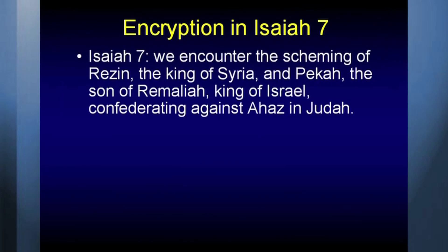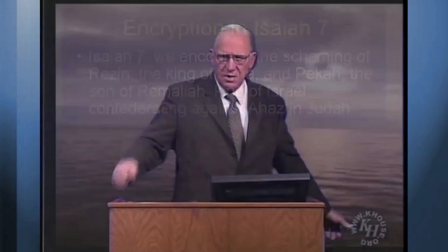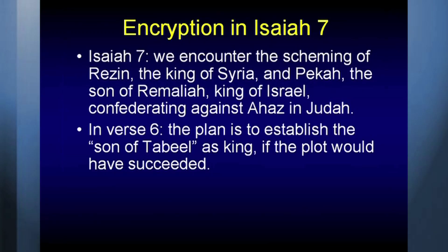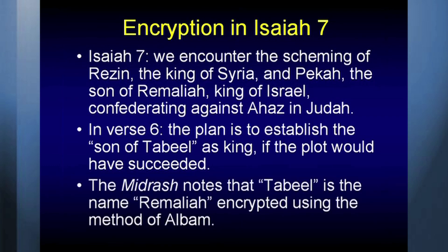We encounter the scheming of Rezin, the king of Syria, and Pekah, the son of Ramalia, the king of Israel. They're confederating against Ahaz, the king of Judah. Northern kingdom and Syria are conspiring against Ahaz and Judah. In verse 6 of Isaiah, the plan is to establish the son of Tabeel as king. Who is he? The Midrash, the Hebrew commentary, notes that Tabeel is the name Ramalia encrypted using the method of Albam.